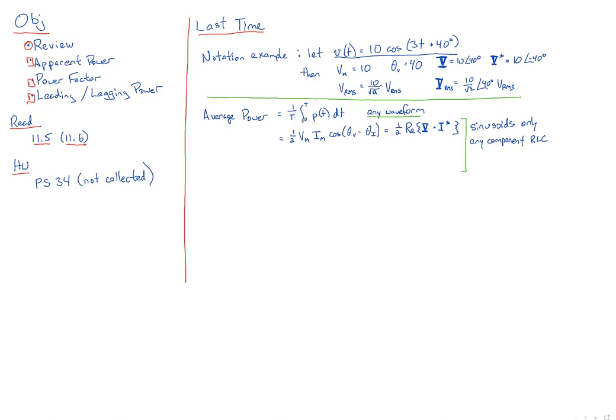So now that we've got the notation down, let's talk about what average power is. This is what we talked about last time. The average power, instead of doing this integral, if we've just got a sinusoid, you can calculate as being one half V max, I max, cosine the difference in angles. Or we can stay in the phasor world here in these bolded numbers and say it's equal to one half the real part of V dotted with I complex conjugate.